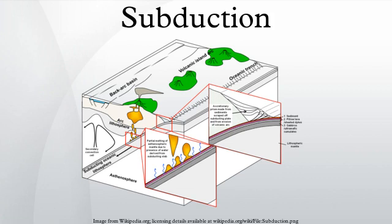Volcanoes that exist along arcs tend to produce dangerous eruptions because they are rich in water and tend to be extremely explosive.